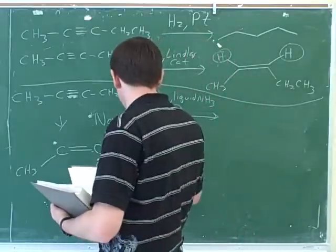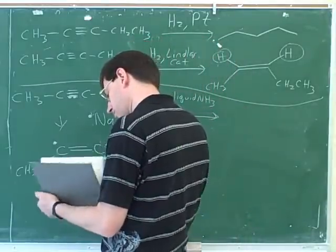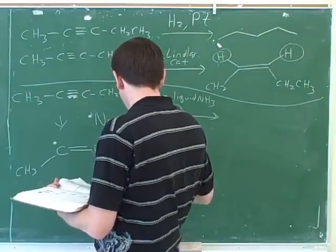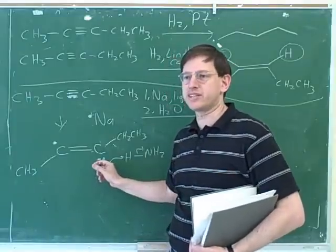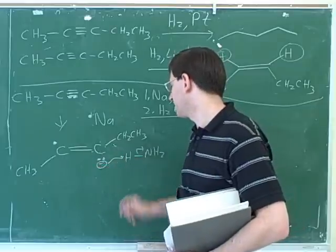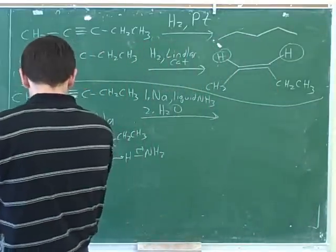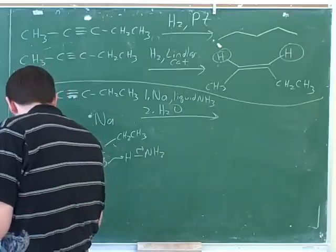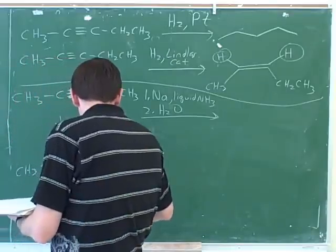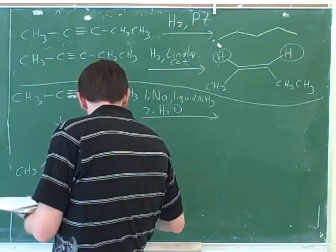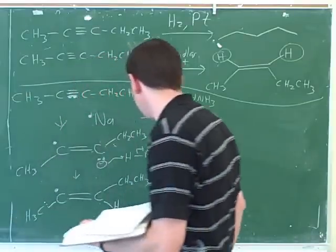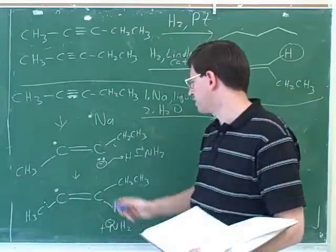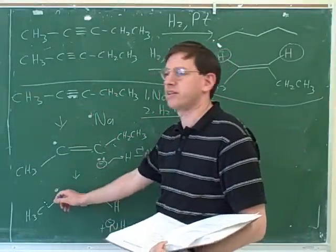Now I'm going to use the liquid ammonia. This carbon has a negative charge and wants to donate electrons, so it's going to steal a proton from the liquid ammonia. That gets rid of the negative charge, but we still have an unpaired electron on the left-hand carbon.